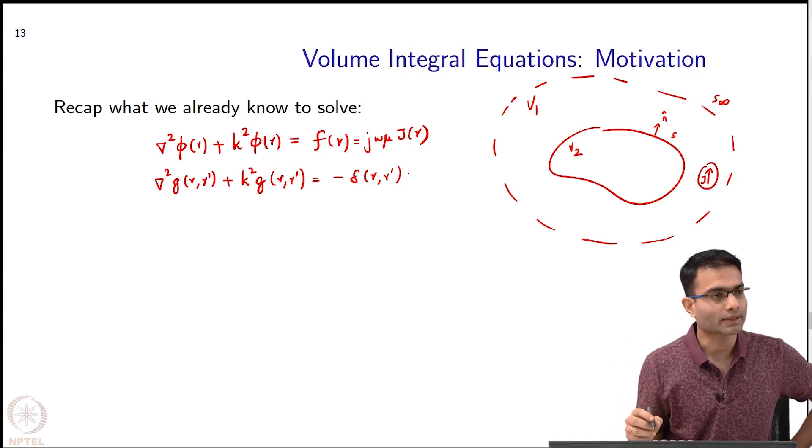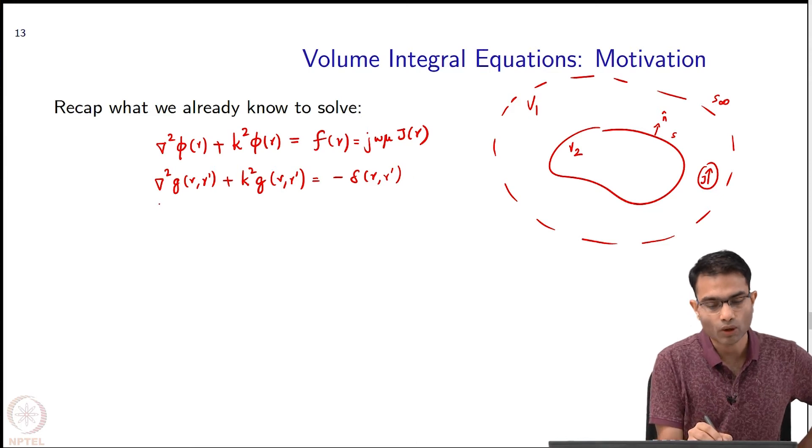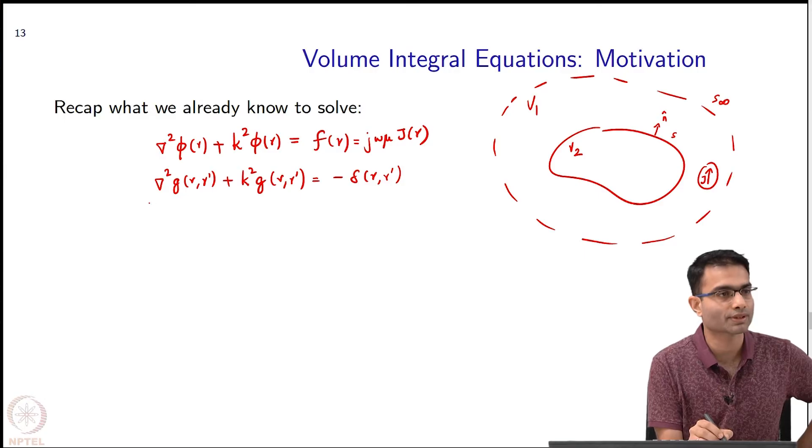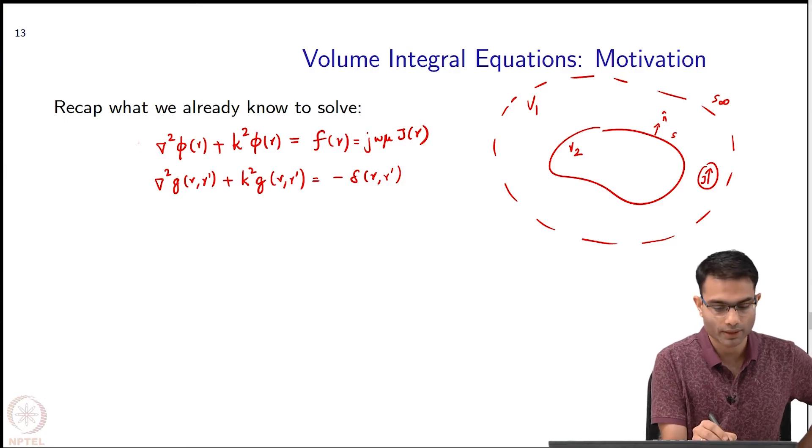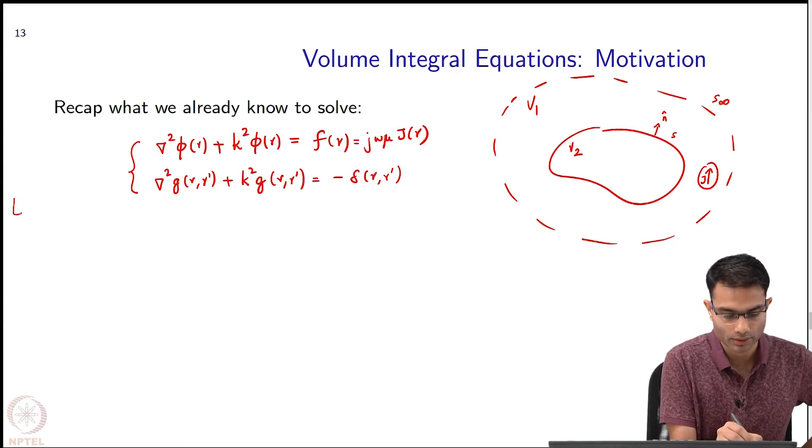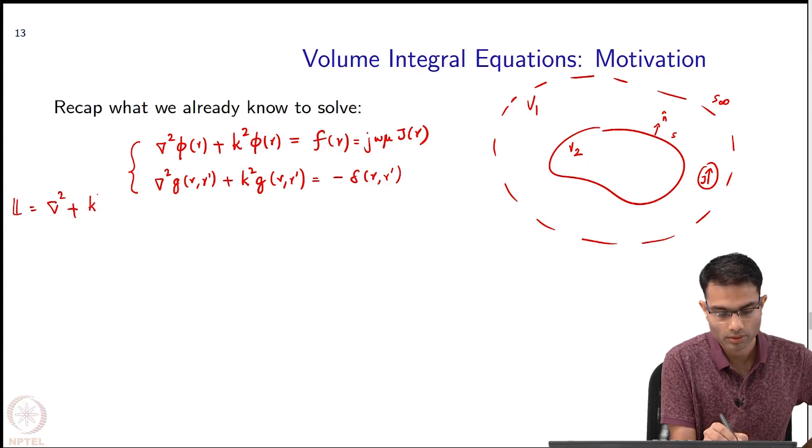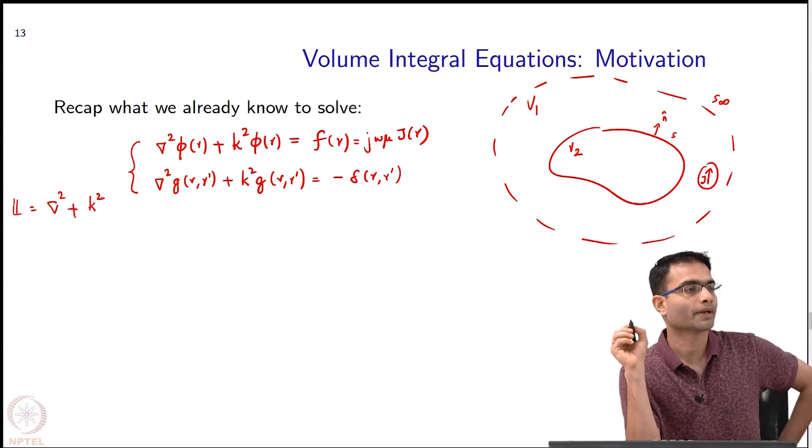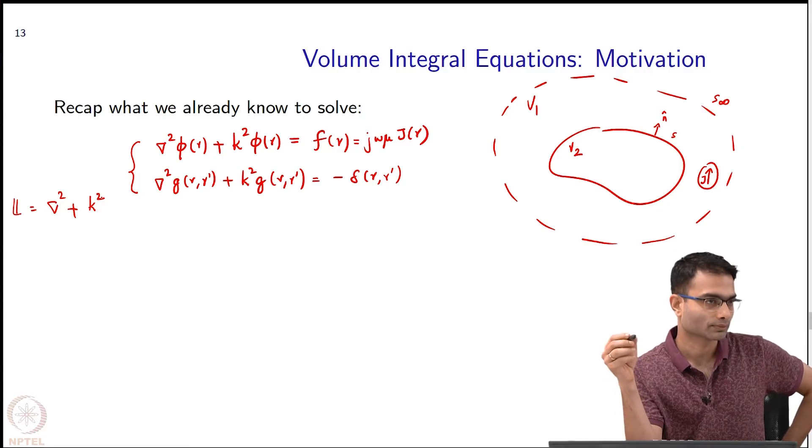Notice one thing that was required in both of these equations is that the operator that I have on the left hand side, for both equations is the same. That operator is del squared plus k squared. When the operator is the same I can use the Green's function.